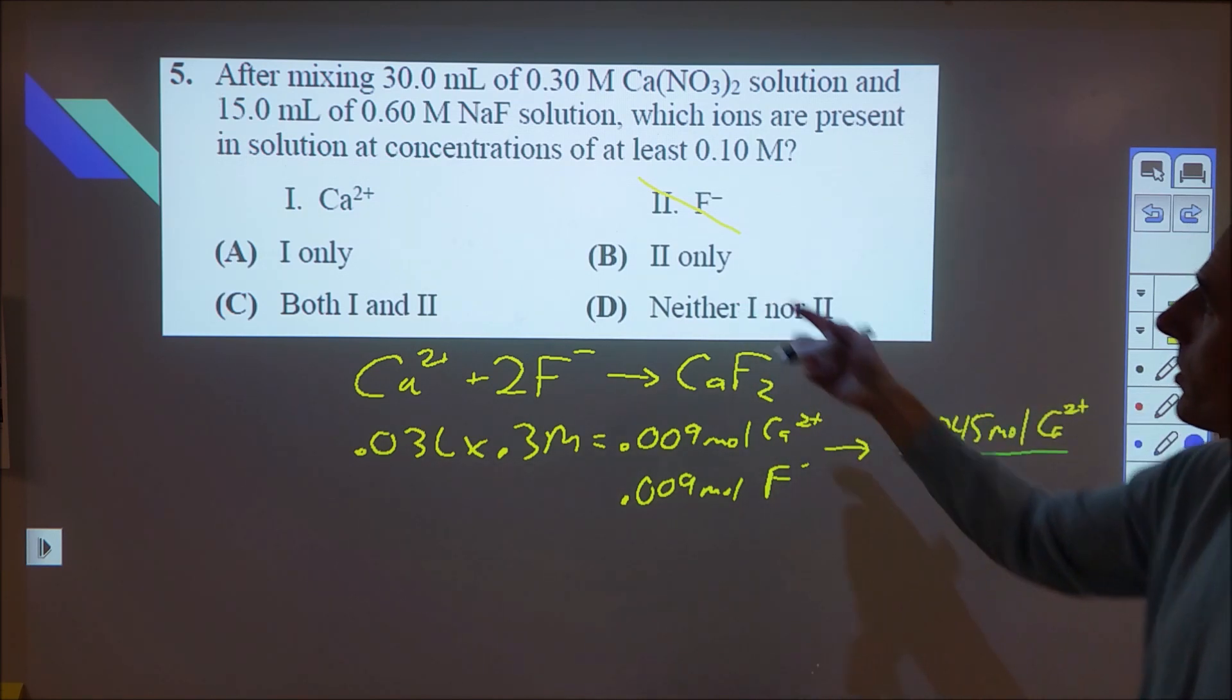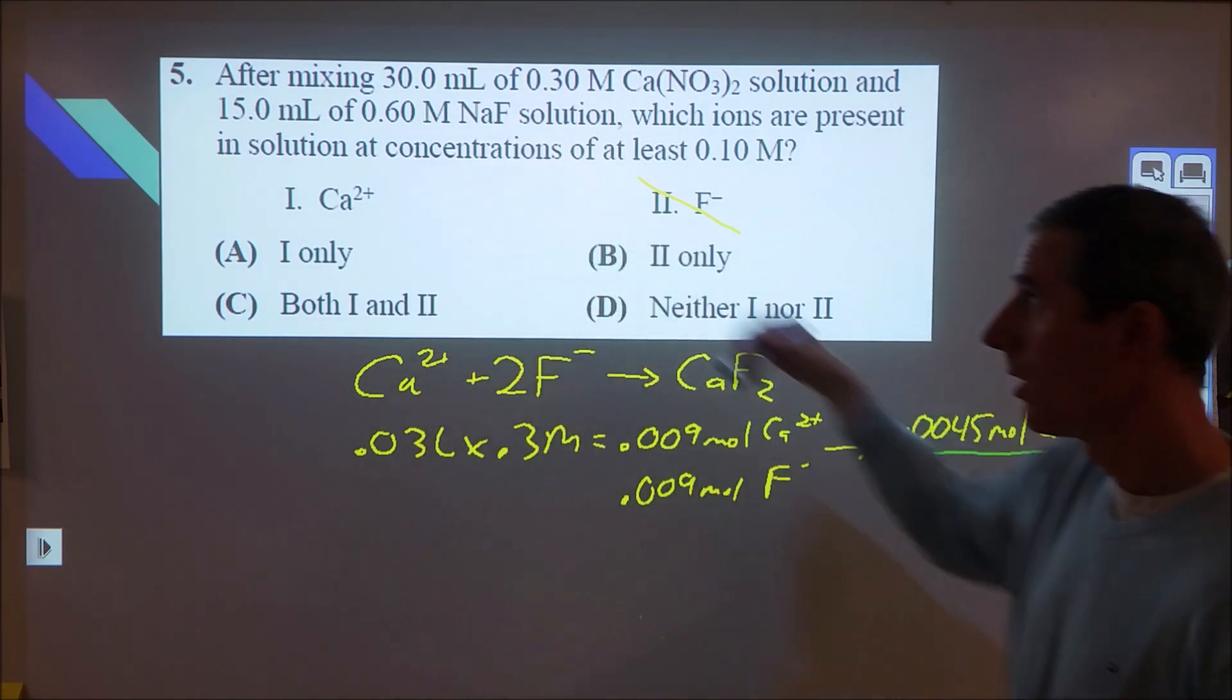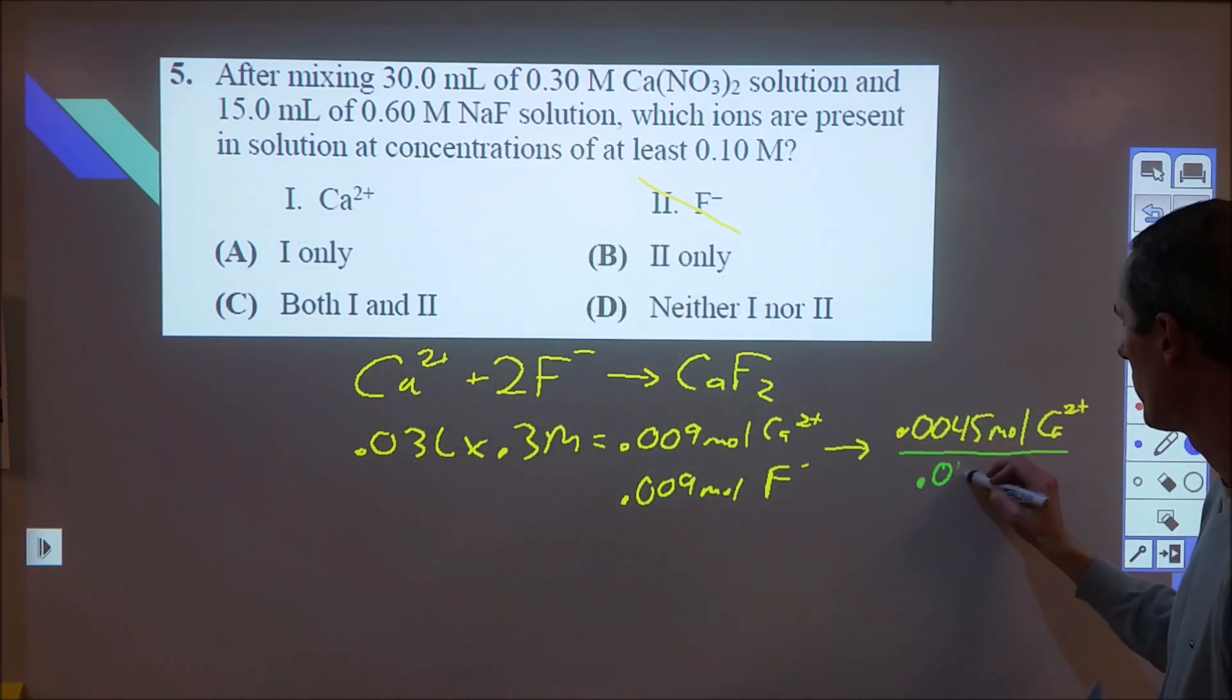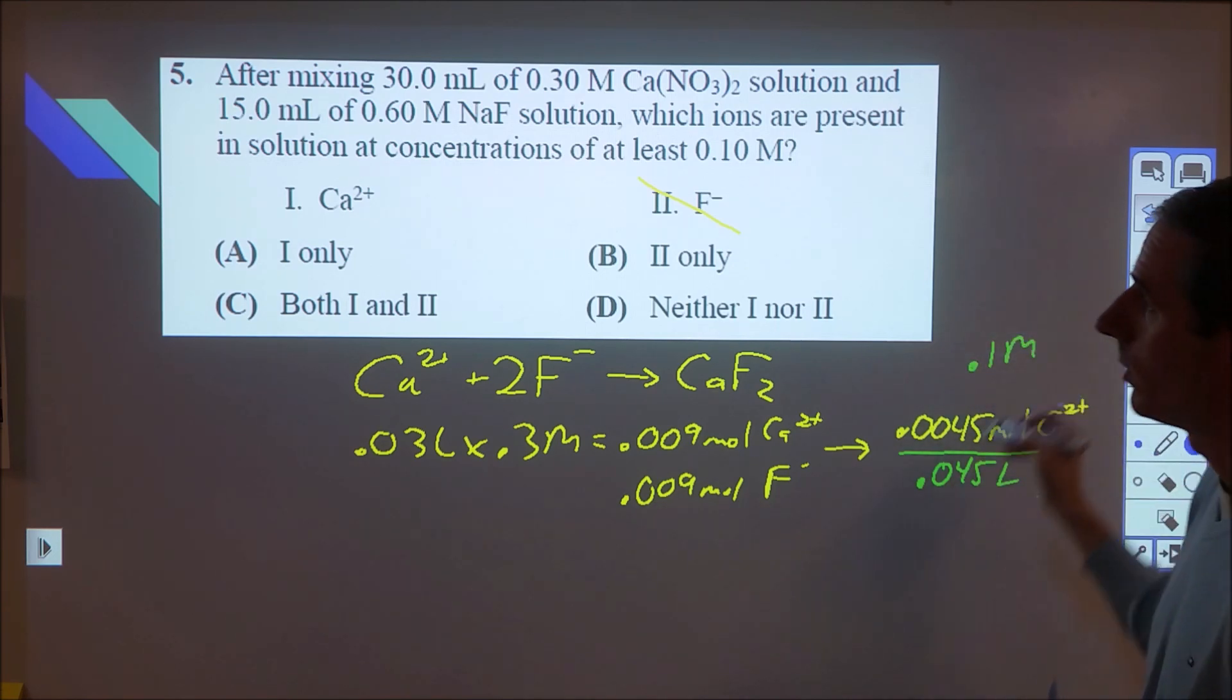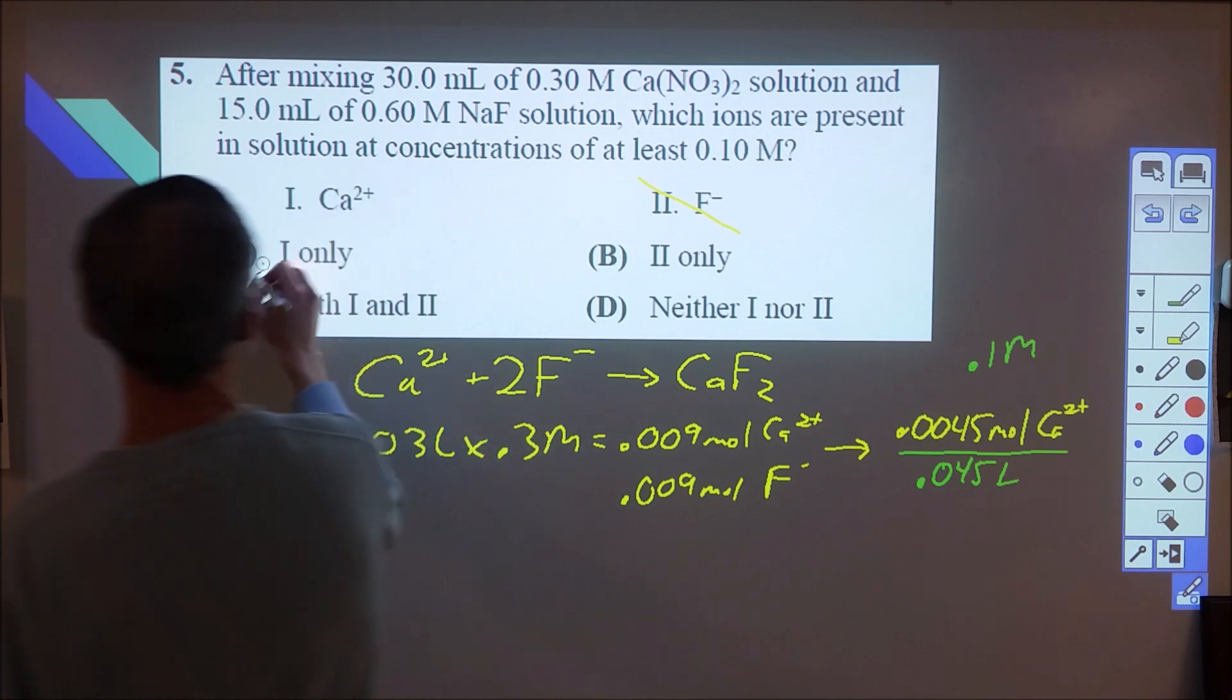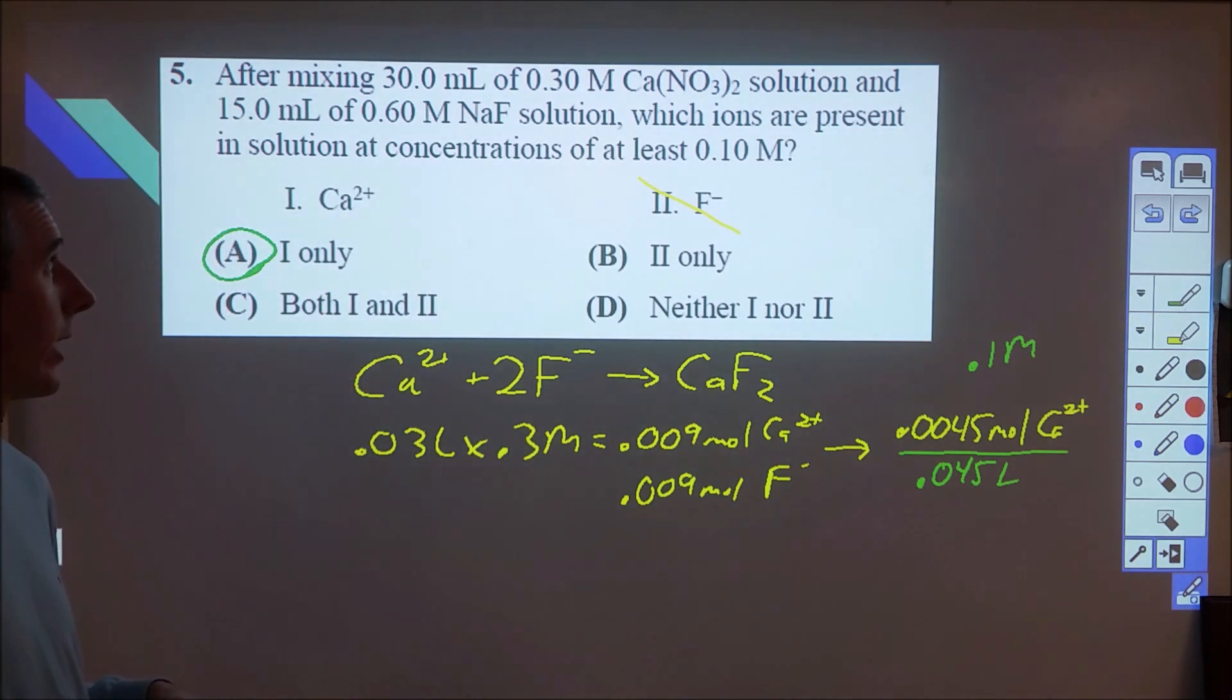Okay, from there, we actually need to do an evaluation to see if this is 0.1 molar. So to do that, we divide that by the sum of the two volumes, which is 45 milliliters or 0.045 liters of solution. So if we do that divided by that, we come out to exactly 0.1, which means that one is correct and two is not. So A is our choice.